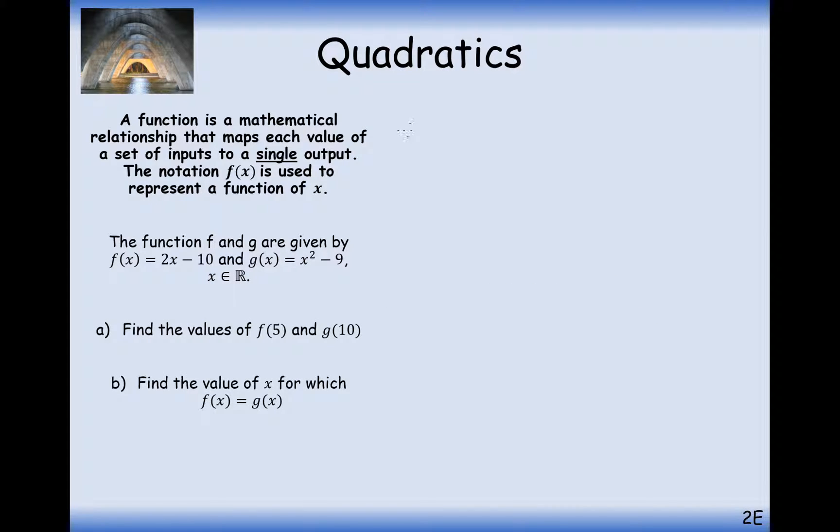So the first thing we're going to do with this is find the values of f of 5 and g of 10. What this means here is we're going to choose 5 as our input value, and you need to work out the output value. So in this case here, all we do is we replace any x's with 5s in our function. So 2 times 5 is 10, take away the 10, and we get a 0. So what we could say here is that 5 is the root of f of x.